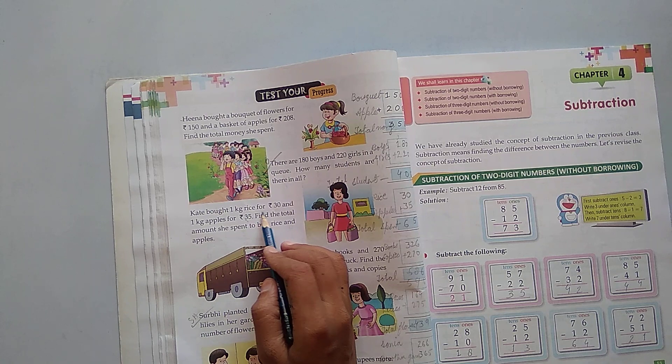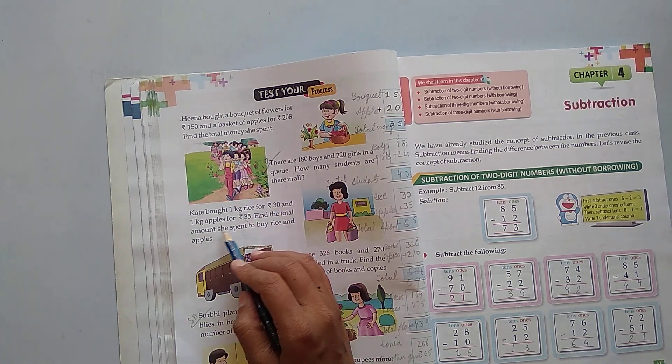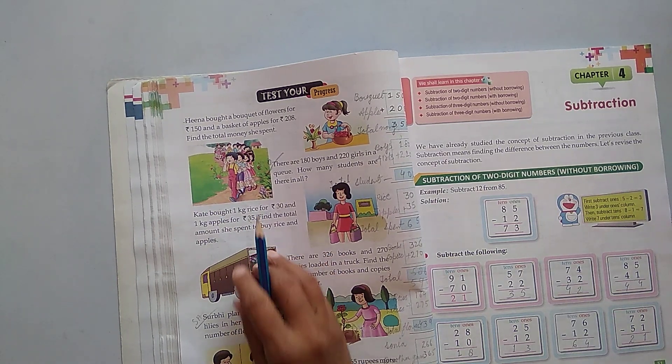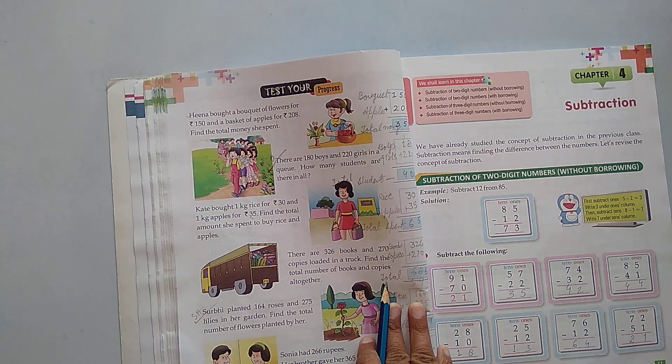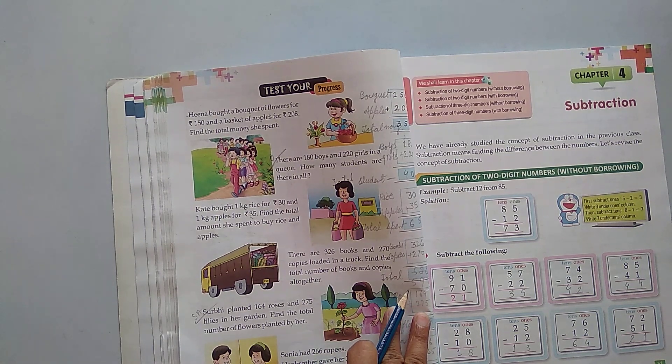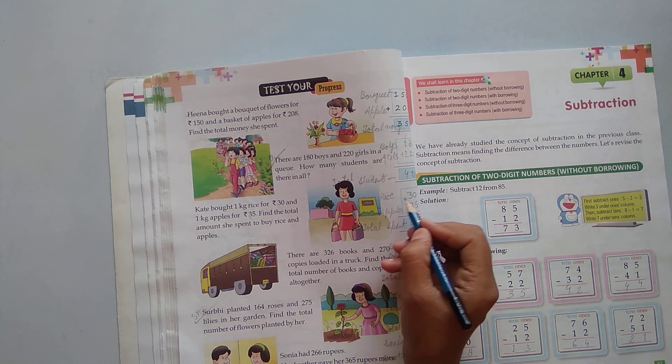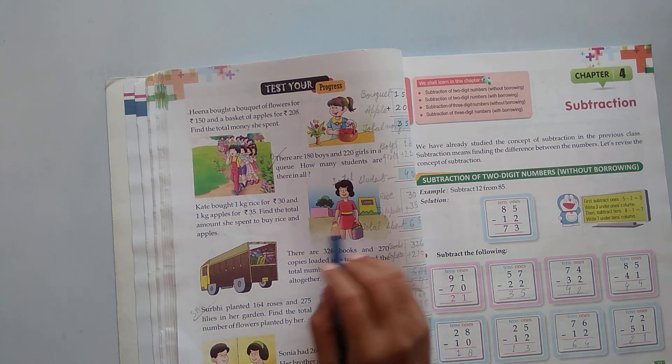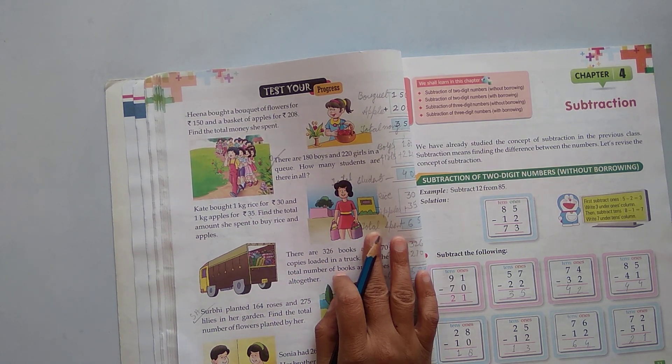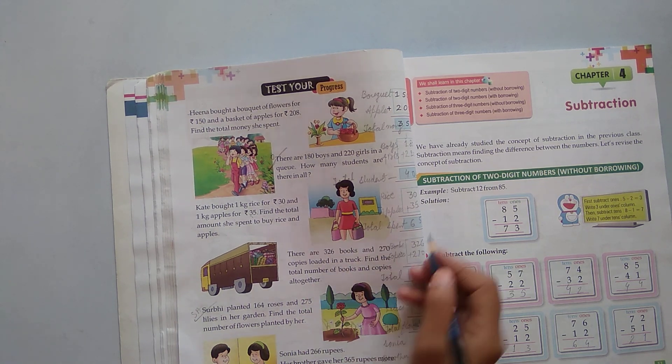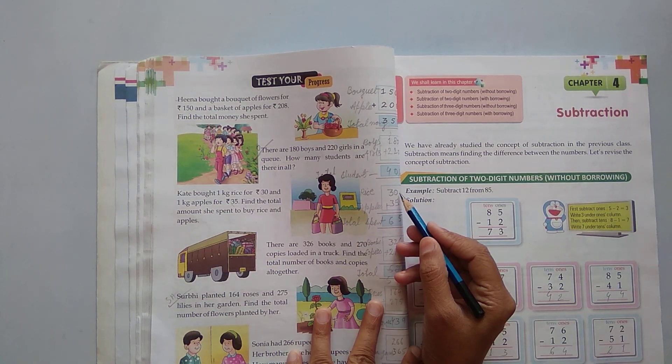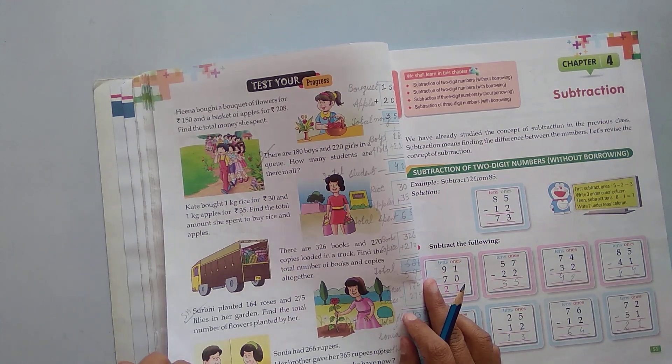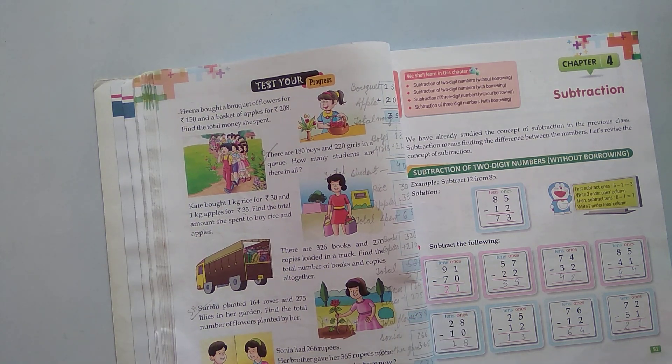Kat buys 1 kg rice for 30 and 1 kg apples for 35. Find the total amount she spent to buy rice and apples. Rice is 30 and apples is 35. Now add: 0 and 5, it becomes 5. 3 and 3, it becomes 6. This is 65. Total is 65.